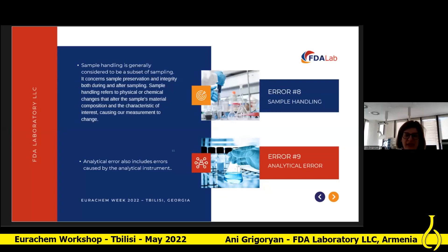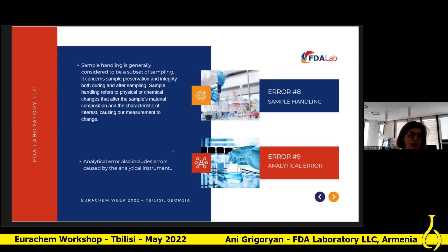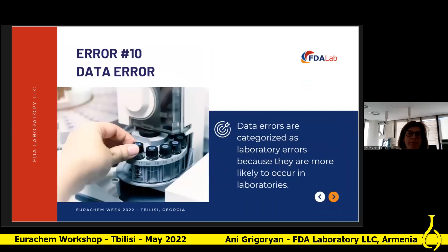Analytical errors include errors caused by the analytical instrument. The error may be determined by performing an instrument precision study with the same sample, arranged through gas chromatography with mass detector, repeated multiple times, with standard deviation calculated. Analytical errors may also include human performance variation in laboratory precision, including things such as incomplete dissolution, splattering during heating, and reading liquid meniscus improperly. Data errors are categorized as laboratory errors because they are most likely to occur in the laboratory, though they can occur anywhere in the process or sampling.